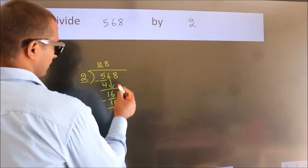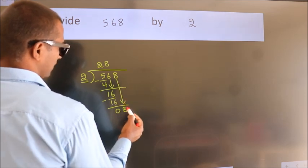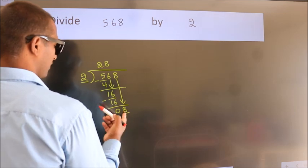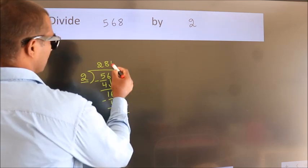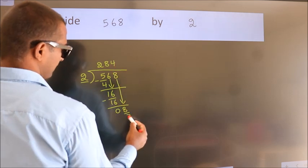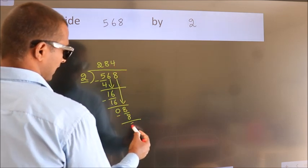After this, bring down the beside number. So, 8 down. 8. When do we get 8? In the 2 table, 2 times 4 is 8. Now we subtract. We get 0.